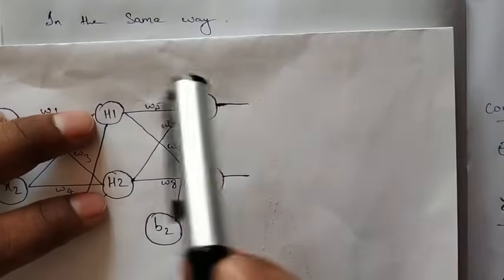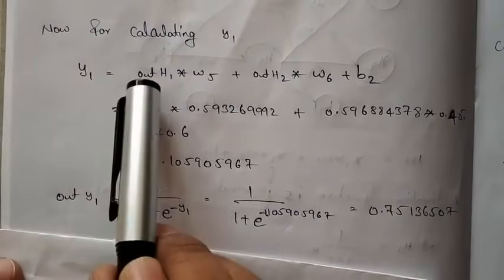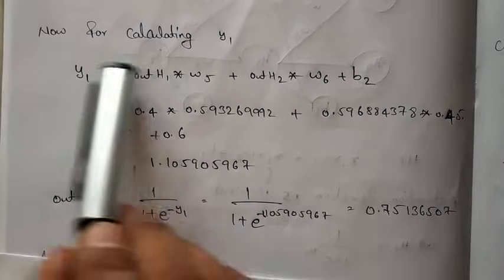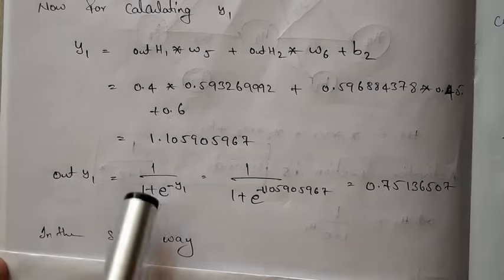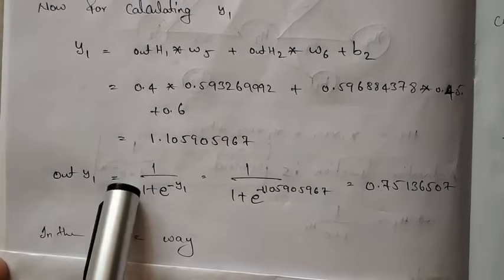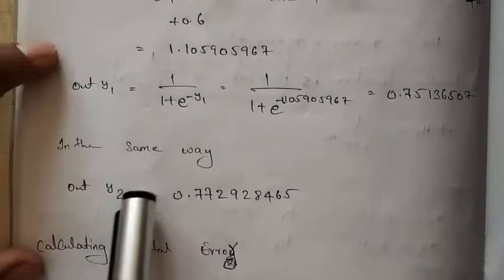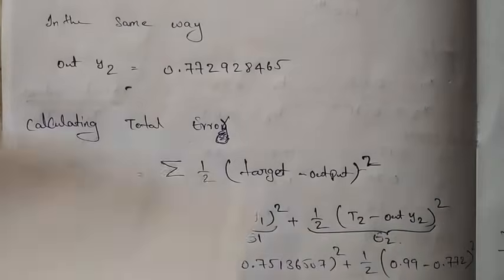From h1 and h2, we calculate y1 and y2. For y1: y1 = output(h1)·w5 + output(h2)·w6 + b2. We get the value y1. Then we apply the activation function: output of y1 = 1 / (1 + e^(-y1)). In the same way, we calculate the value of y2. So we now have both output values, y1 and y2.